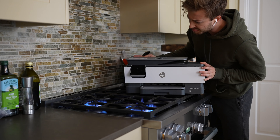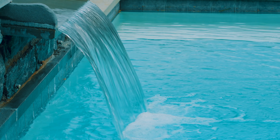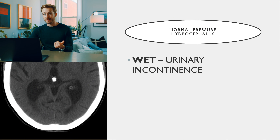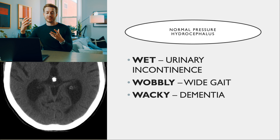The next one is WET, WOBBLY, and WACKY — clinical signs of normal pressure hydrocephalus, where there's excess cerebrospinal fluid in the brain. It's called 'normal pressure' because a spinal tap reveals normal pressure despite the fluid buildup. Wet means urinary incontinence, wobbly means gait instability, and wacky means Alzheimer's-like dementia symptoms.